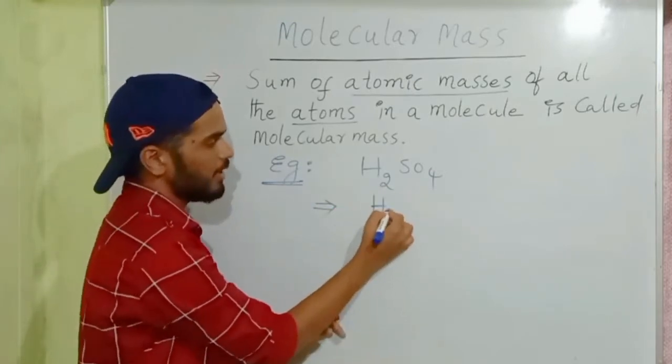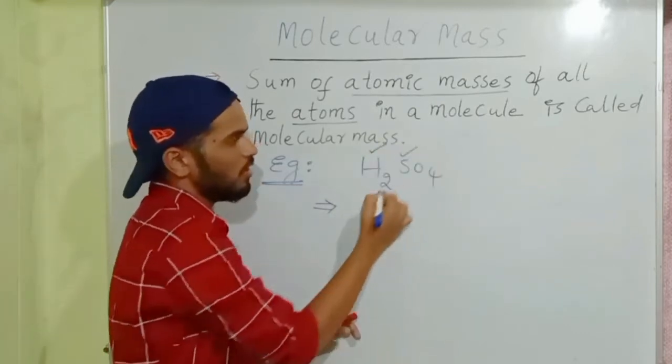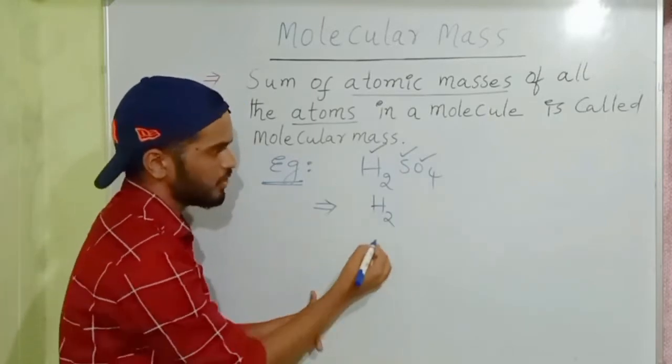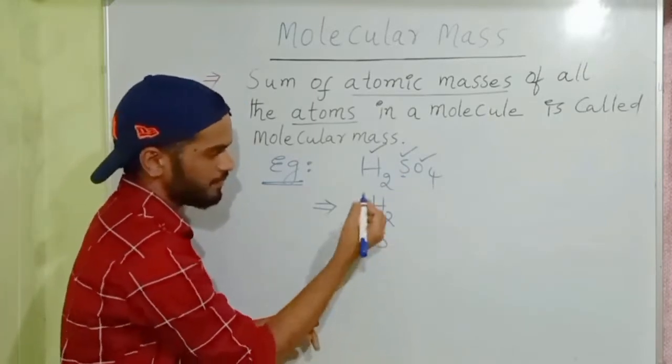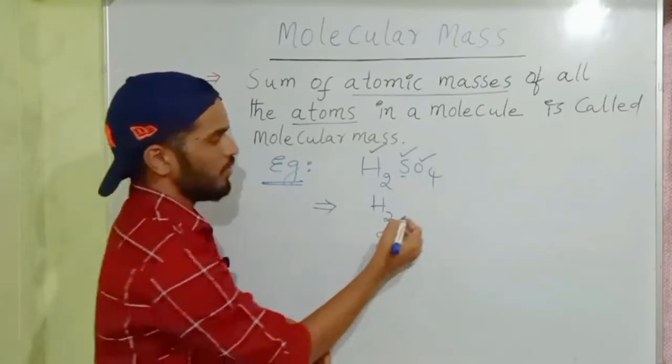We have to take the separate atoms. H2SO4 - how many elements are there? Hydrogen, sulfur, and oxygen - three elements. So hydrogen is H2, sulfur is S, and oxygen is O.